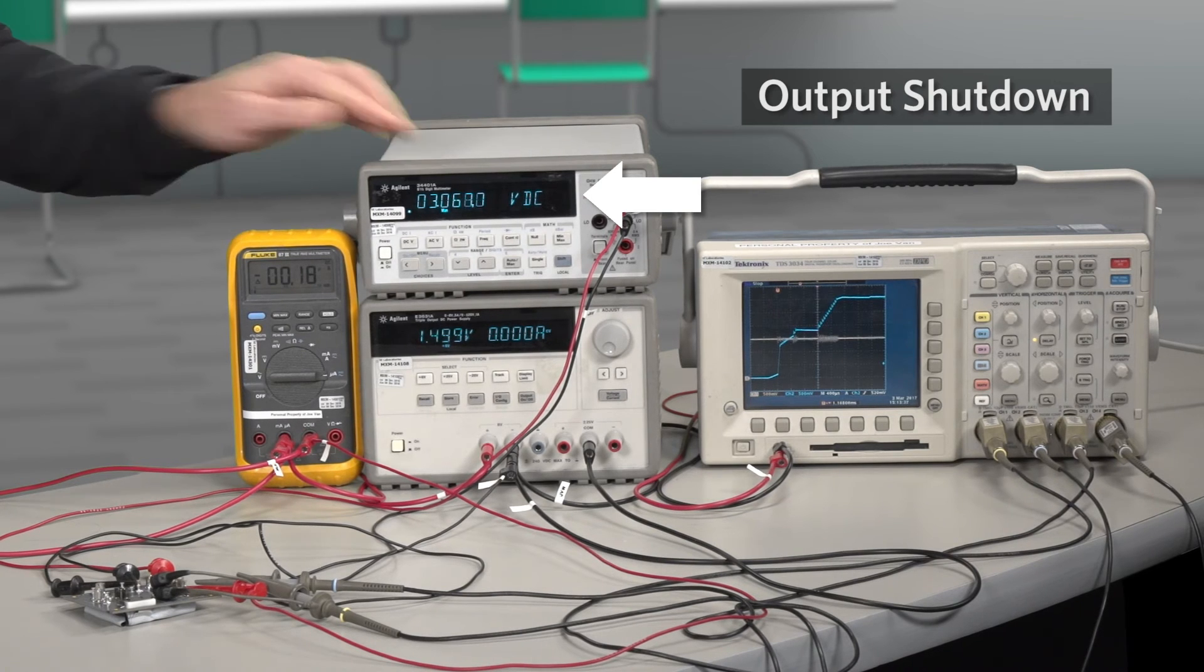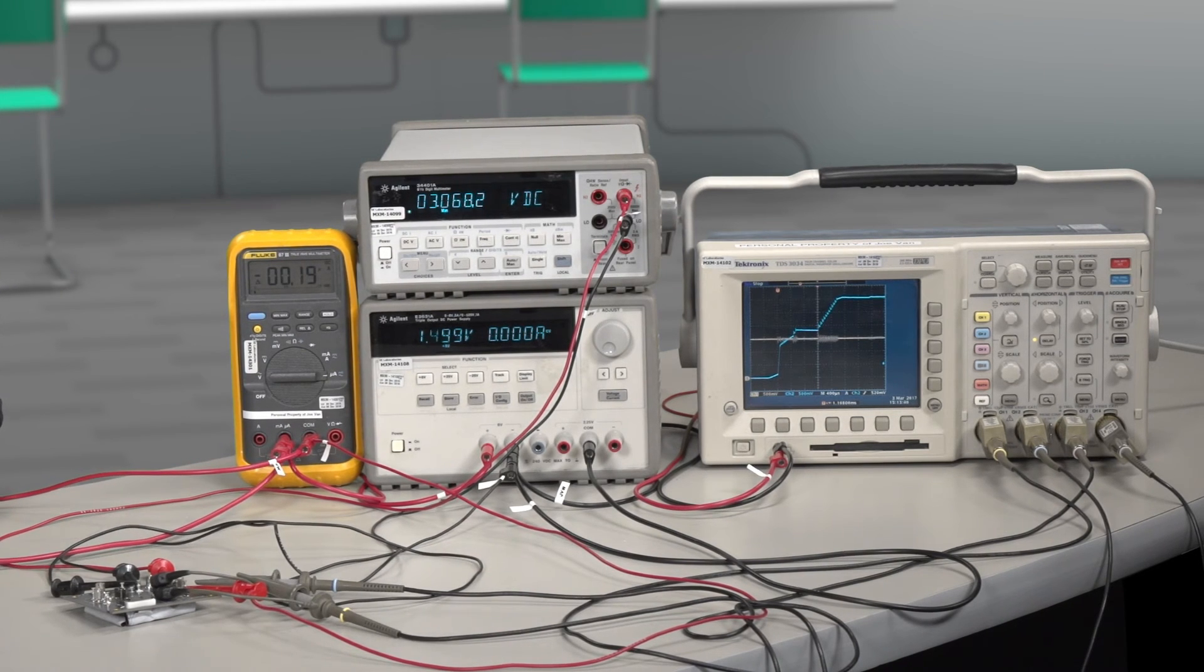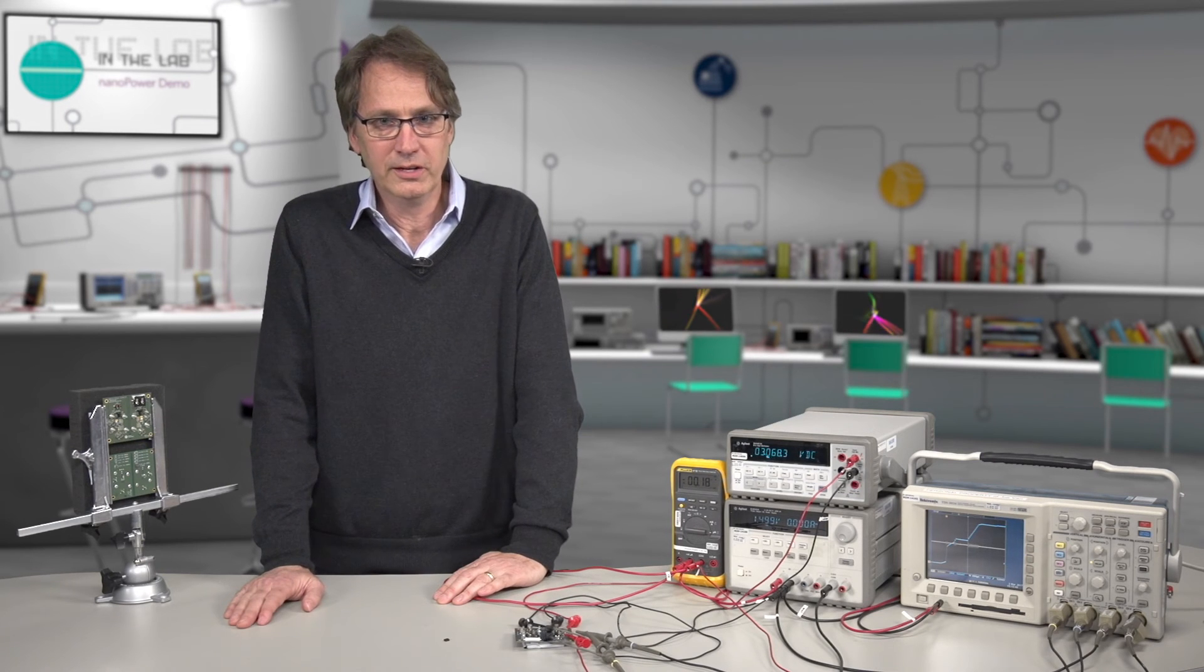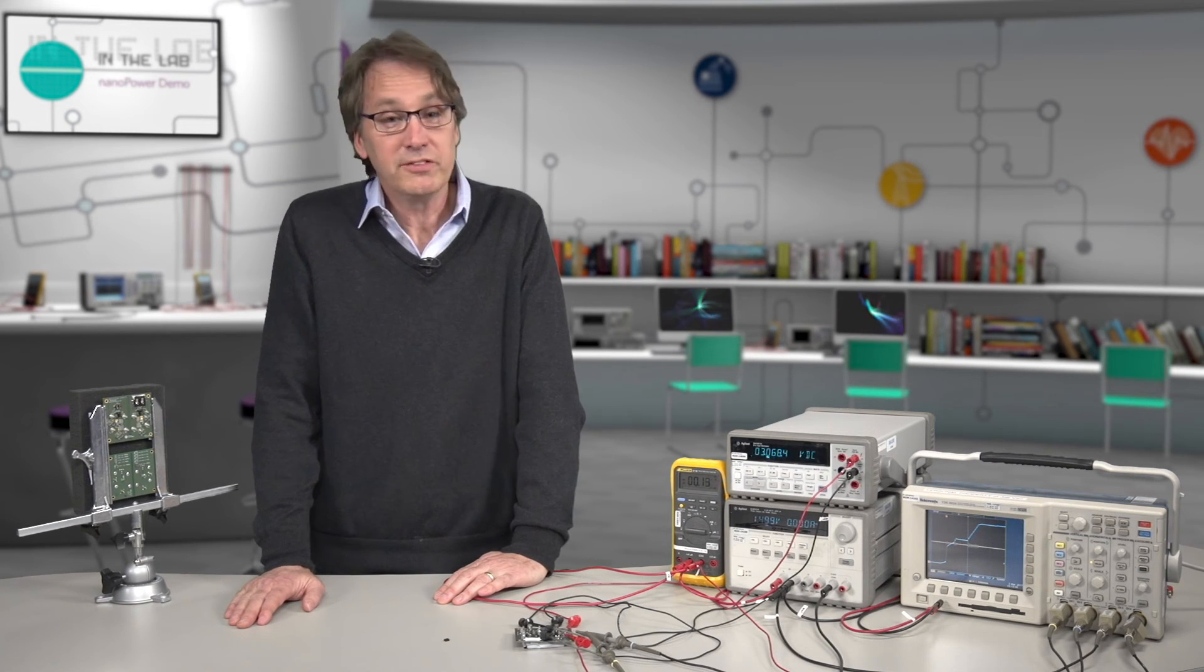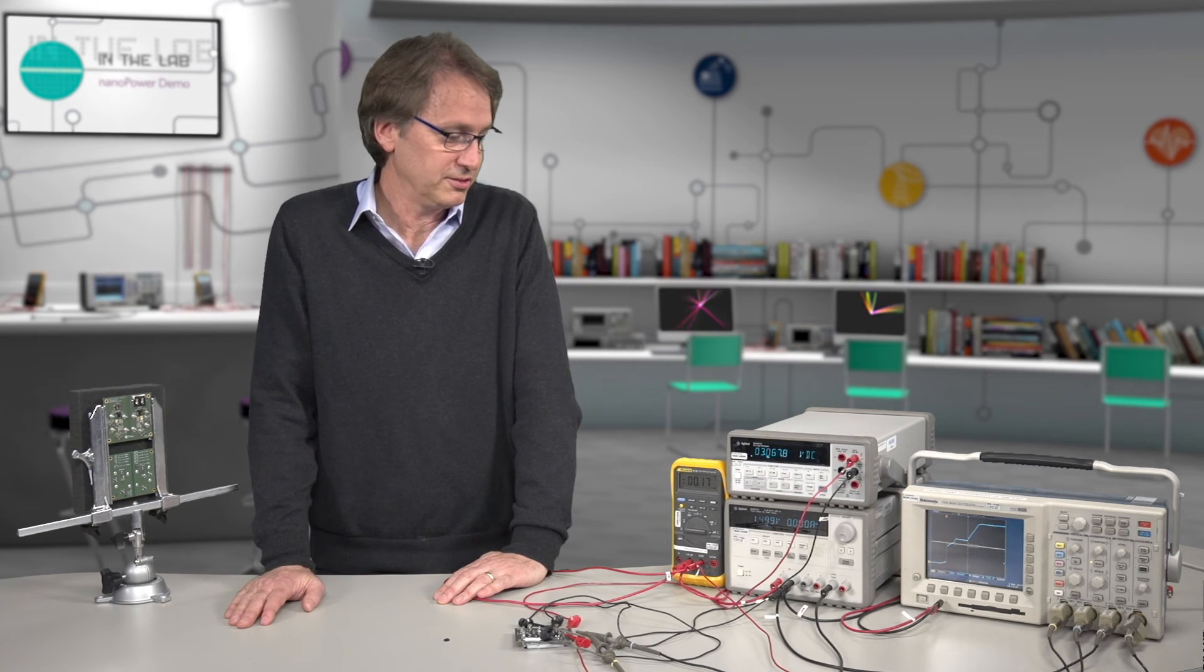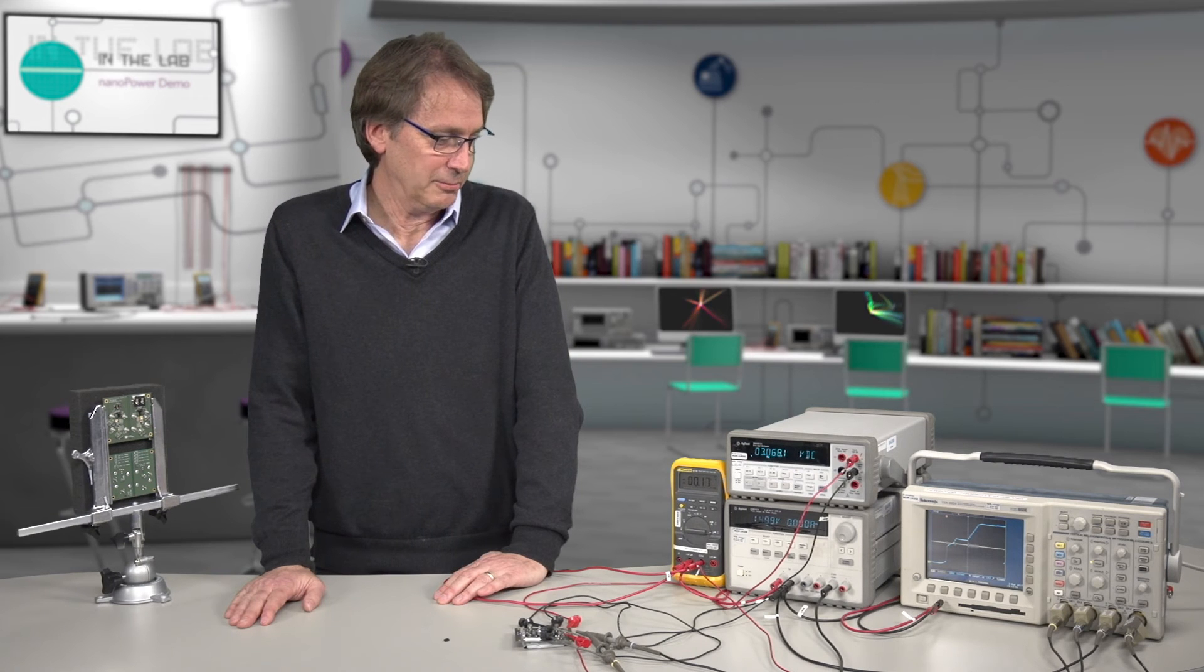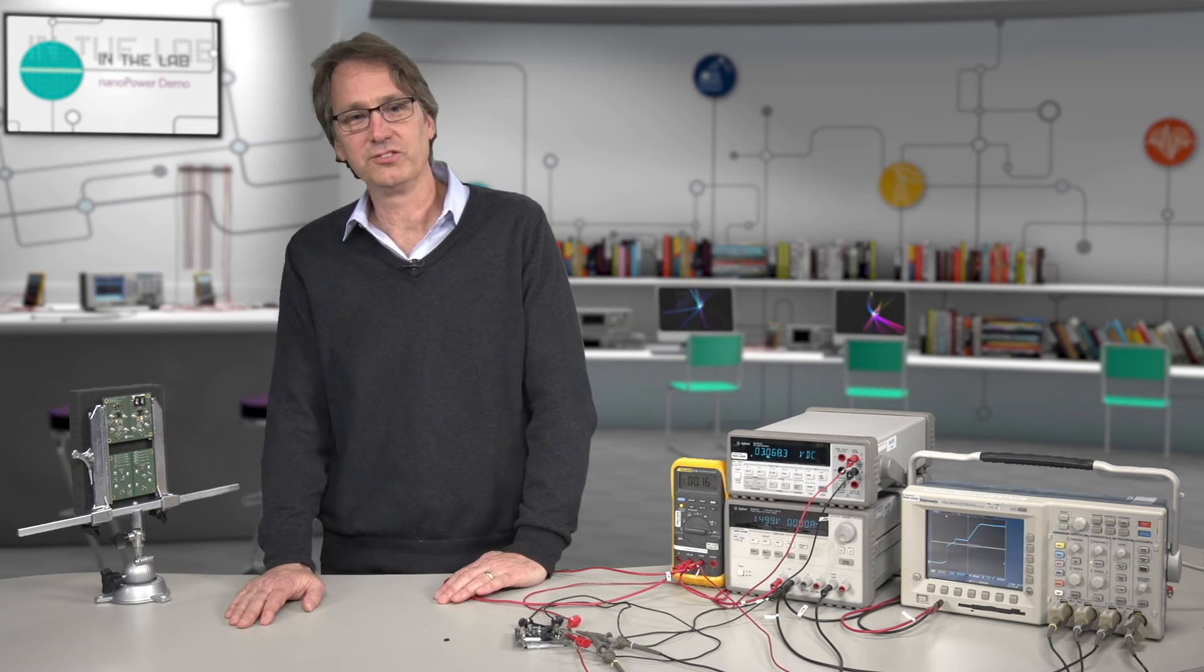The reason is because this actually has a true shutdown feature that allows the output not to draw any quiescent current from the load after it's shut off, even if the output is at 3 volts. And that's a nice feature to have in the case where you want to take the output and regulate it from an alternate source.